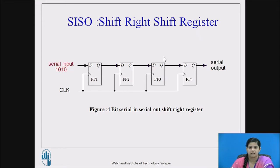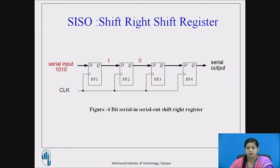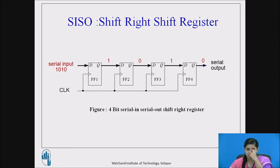Let us consider the data 1010; we have to move this data towards the right one by one bit. At the first clock pulse, 0 will appear at the output of the first flip flop. At the next clock pulse, the 0 is shifted towards the right as it is the input of the second flip flop, so 0 will be at flip flop 2 and the output of flip flop 1 will be the new bit, that is 1. At the third clock pulse the data will be 0, 1, 0, and at the fourth clock pulse the data will be 1, 0, 1, 0. So it works in serial manner to shift the data towards the right.